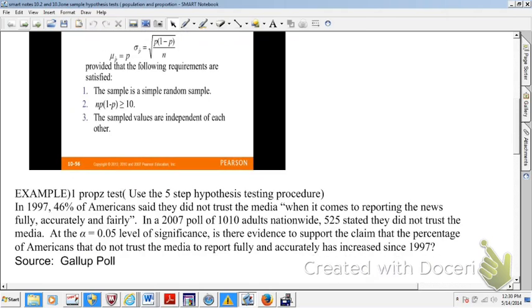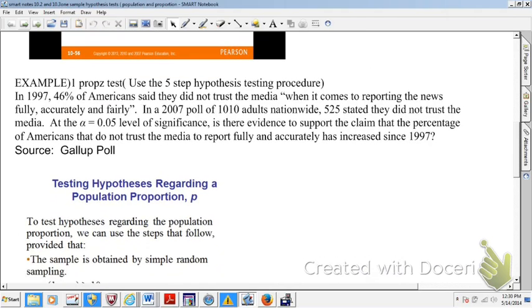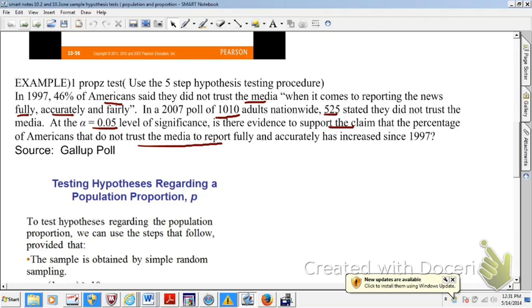Okay, let's keep paging down here. Here is the example that we want to work on today, and I show you how to do it by hand and on the calculator and possibly even Excel today. A one-prop-Z test. In 1997, 46% of Americans said they did not trust the media when it comes to reporting the news fully, accurately, and fairly. In a 2000 poll of a little over 1,010 adults nationwide, 525 said that they did not trust the media. At the 5% alpha level, is there evidence to support the claim that the percent of Americans that do not trust the media has increased since 1997?